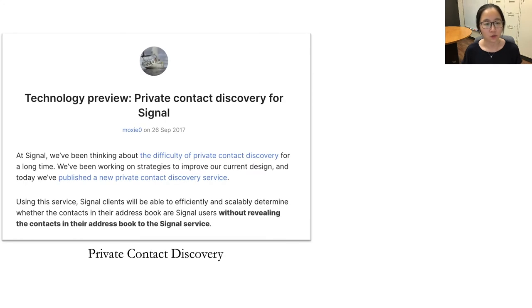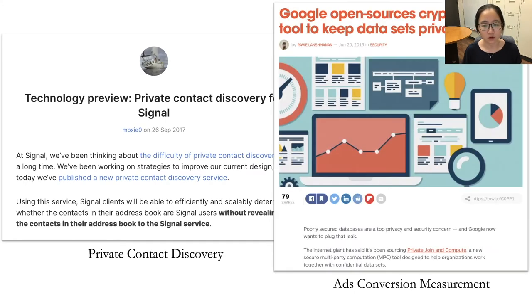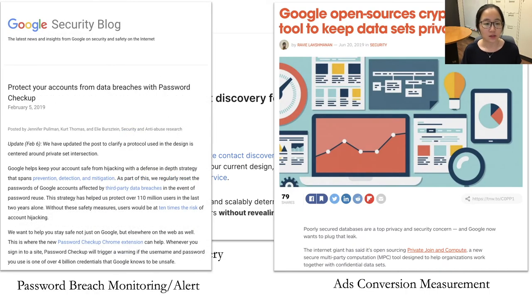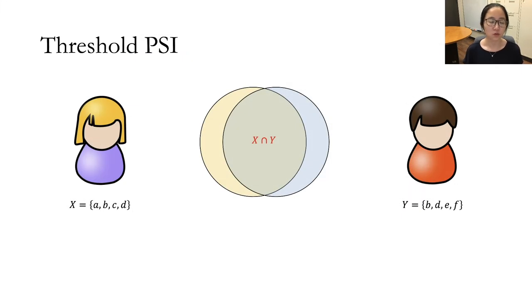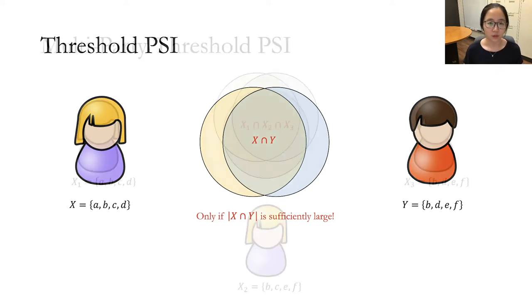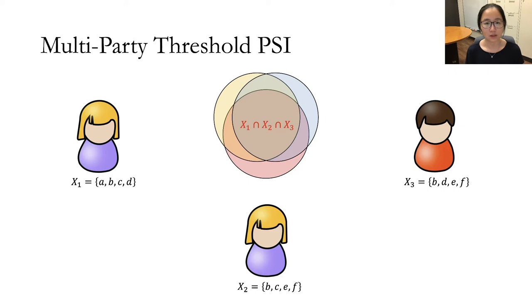The PSI problem has a lot of applications in practice, for example, private contact discovery, ad-conversion measurement, password bridge monitoring and alert, and many more. But in certain scenarios, PSI as a functionality is not sufficient — we need something stronger. For example, threshold PSI, where the two parties are only supposed to learn the intersection if the intersection is sufficiently large. And similarly, in the multi-party scenario, they're only supposed to learn the intersection if the intersection of all the sets is sufficiently large.